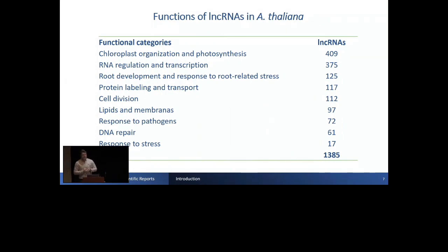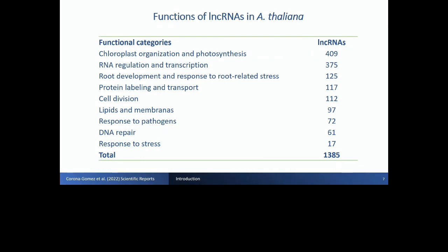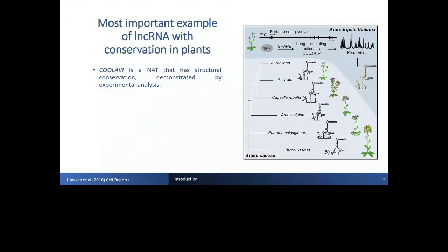In this previous work, we searched for the possible functions of long non-coding RNAs in Arabidopsis thaliana. For this, we used a co-expression network — a guilt-by-association approach — and we found a fraction of the long non-coding RNAs with possible functions. The principal function, in terms of number of long non-coding RNAs, was chloroplast organization and photosynthesis, followed by RNA regulatory and transcription functions. However, we could only annotate the function of a fraction of the long non-coding RNAs.